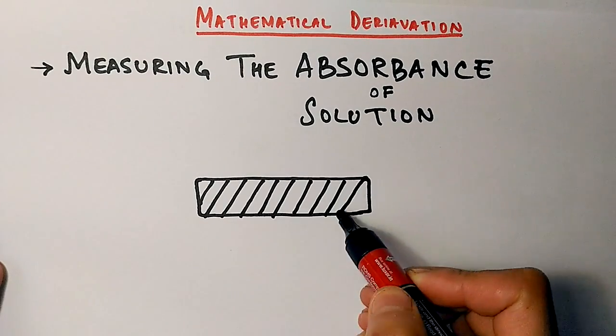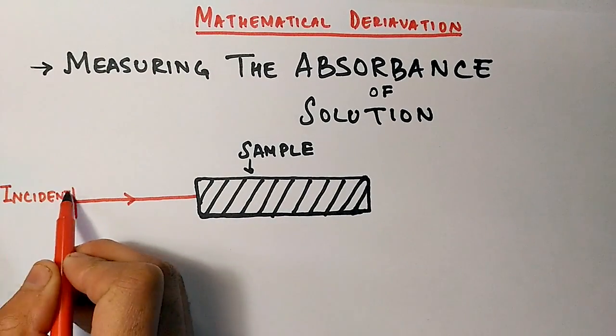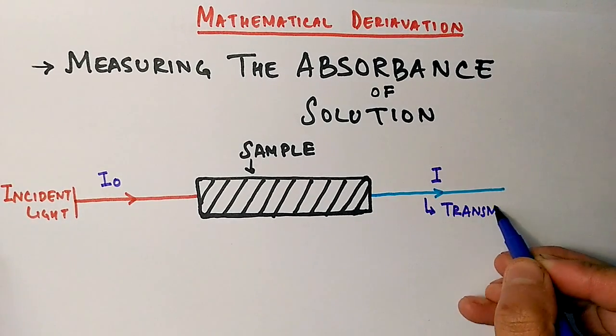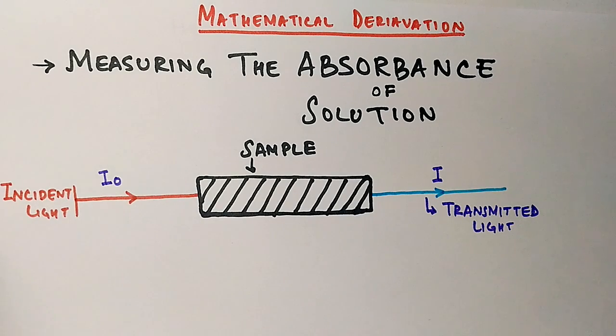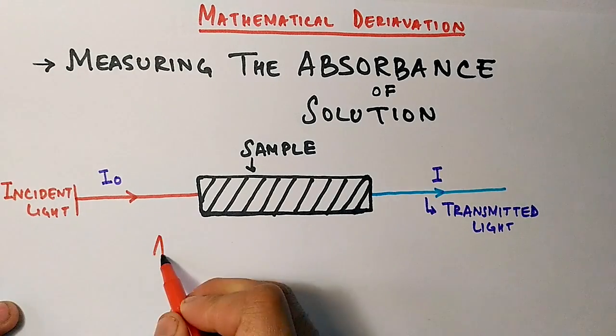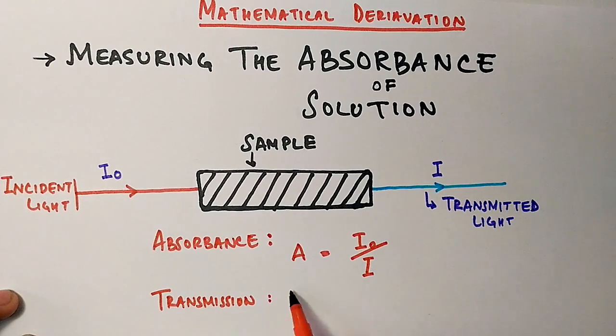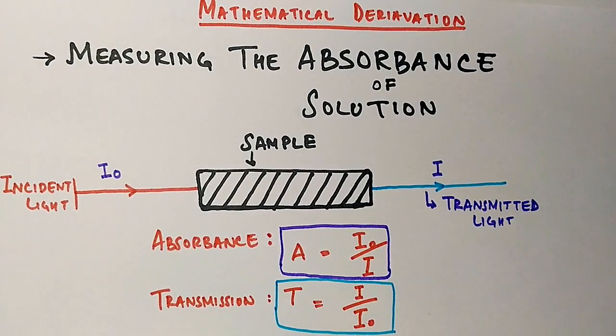Here is the sample, then from here the incident light, which is denoted by I₀, passes through the sample and we get the transmission of light, that's I. Absorbance is given as A equals I₀ by I, and transmission is given as I by I₀.